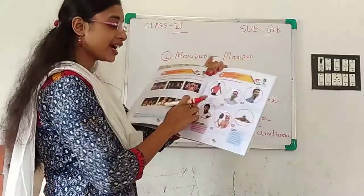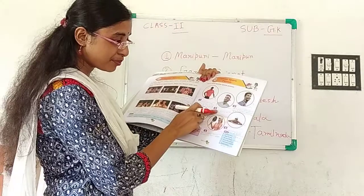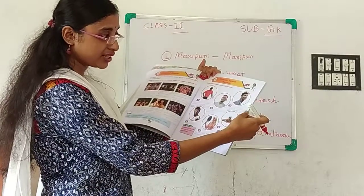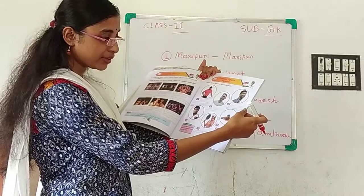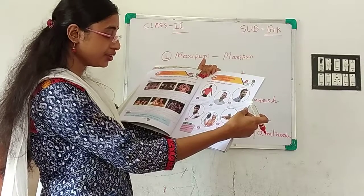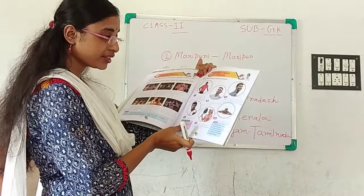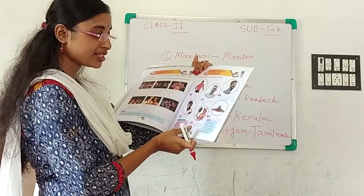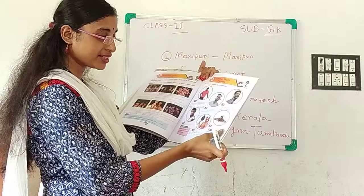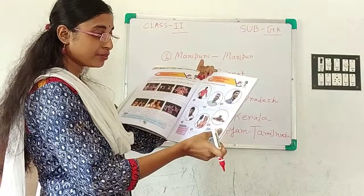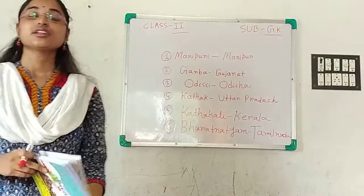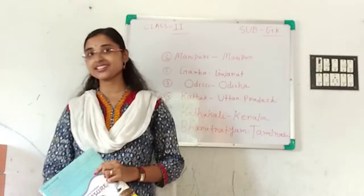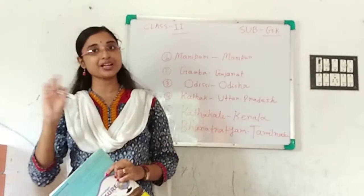So the sports persons are: 1. Tiger Woods, 2. Rafael Nadal, 3. Cristiano Ronaldo, 4. Leander Paes, 5. Maria Sharapova, 6. Michael Phelps. Do it in your book. That's all for today. See you in the next class. Have a nice day. Bye-bye.